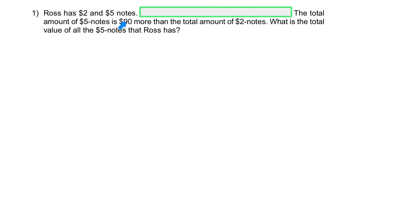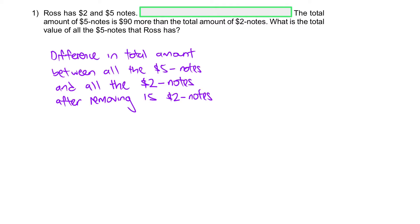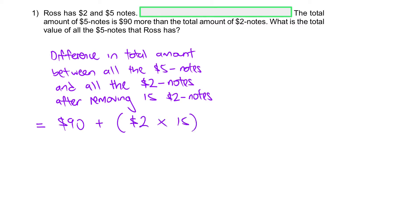So the difference between them is going to grow by another $30, giving you $120. Let me write out the first step: difference in total amount between all the $5 notes and all the $2 notes after removing the 15 $2 notes. The difference will increase by $30 — that is, 15 times $2 — to reach $120.